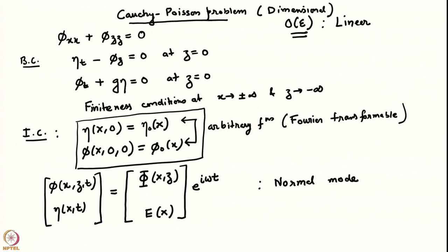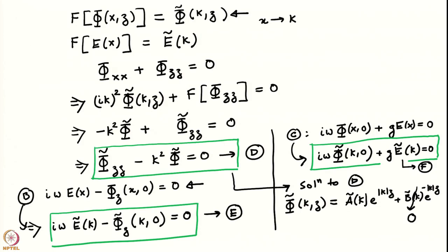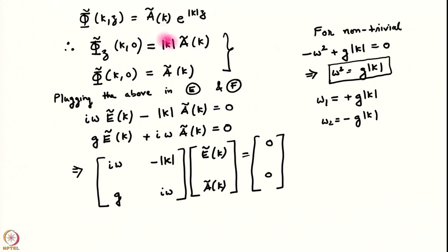We wrote the two degrees of freedom as some eigenfunction into e to the power i omega t, and then we wrote down the eigenfunctions in Fourier space by taking a Fourier transform of the equation. We discovered that by doing the Fourier transform we can actually solve the Laplace equation like an ordinary differential equation. Its solution is an exponential, and we eliminated the second exponential because of finiteness conditions at minus infinity. Then we used the two boundary conditions — the linearized kinematic boundary condition and the linearized Bernoulli equation — to get two algebraic equations in two unknowns. The determinant of the coefficient matrix gave us the dispersion relation we had already found earlier.